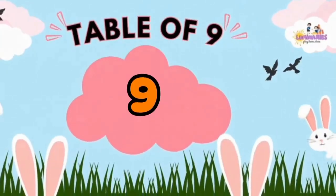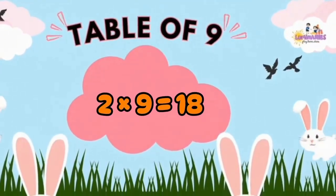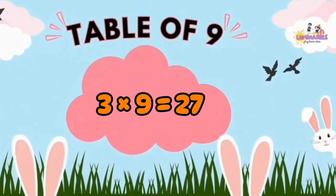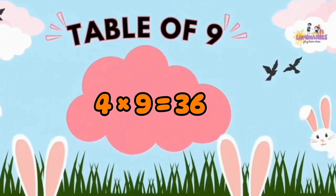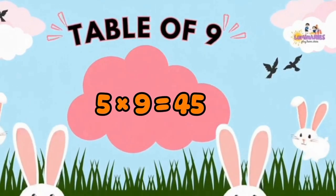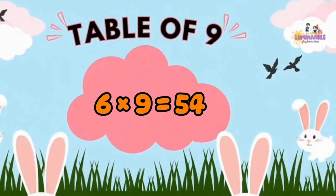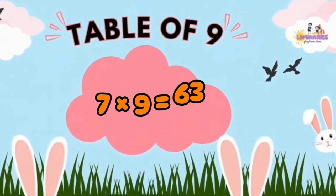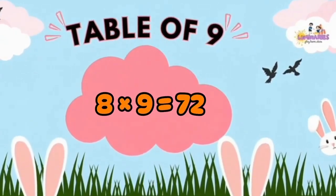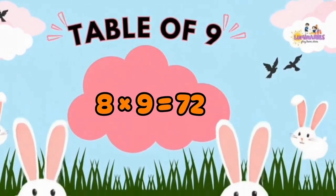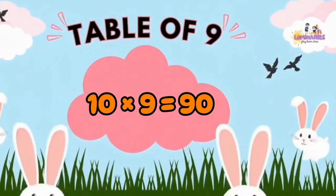Table of 9. 1 x 9 is 9. 2 x 9 is 18. 3 x 9 is 27. 4 x 9 is 36. 5 x 9 is 45. 6 x 9 is 54. 7 x 9 is 63. 8 x 9 is 72. 9 x 9 is 81. 10 x 9 is 90.